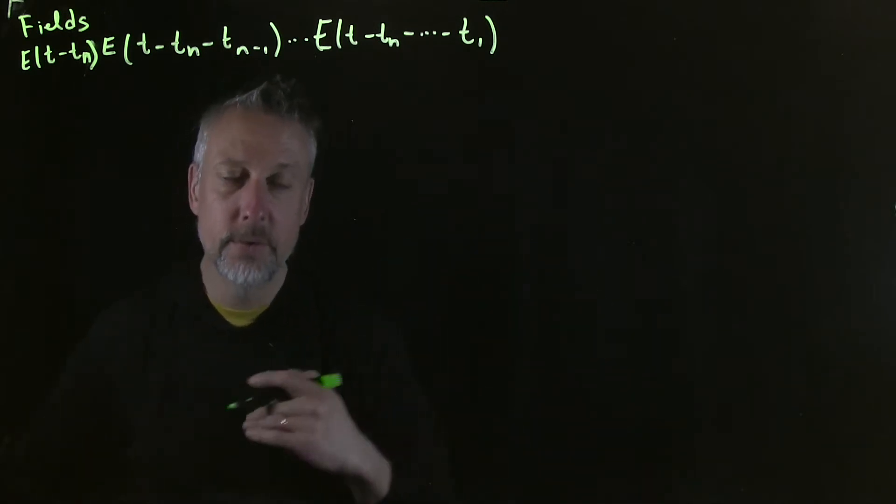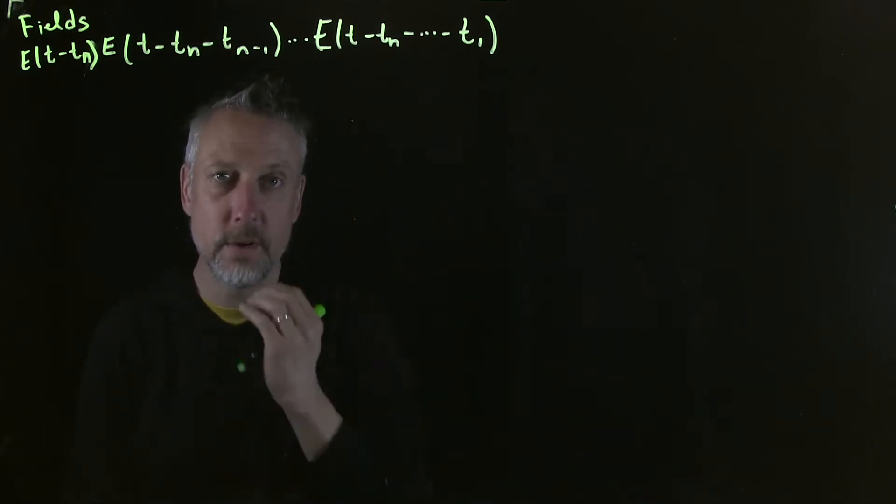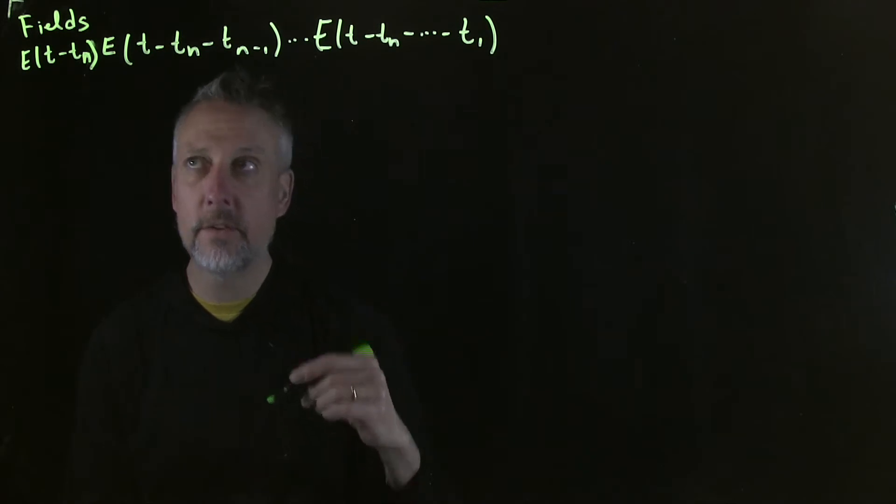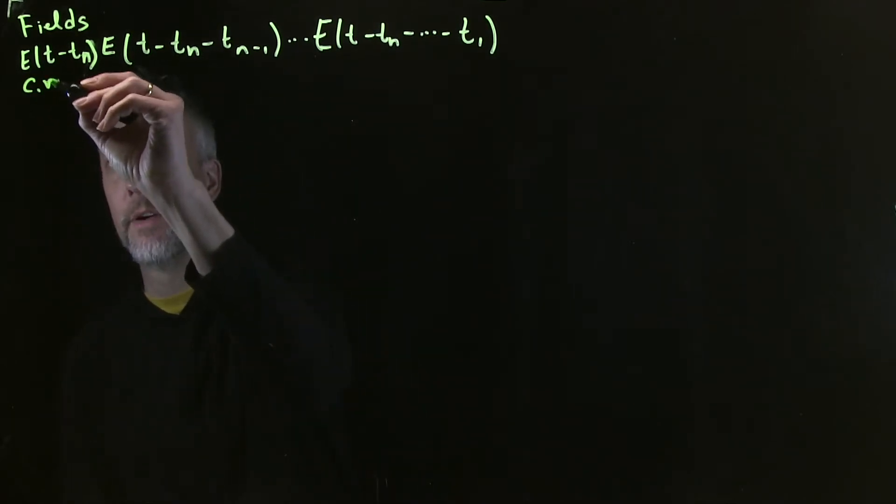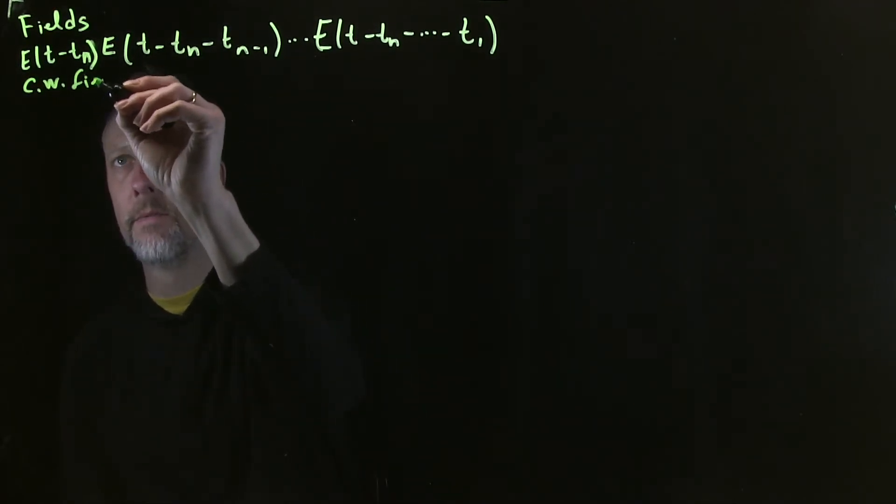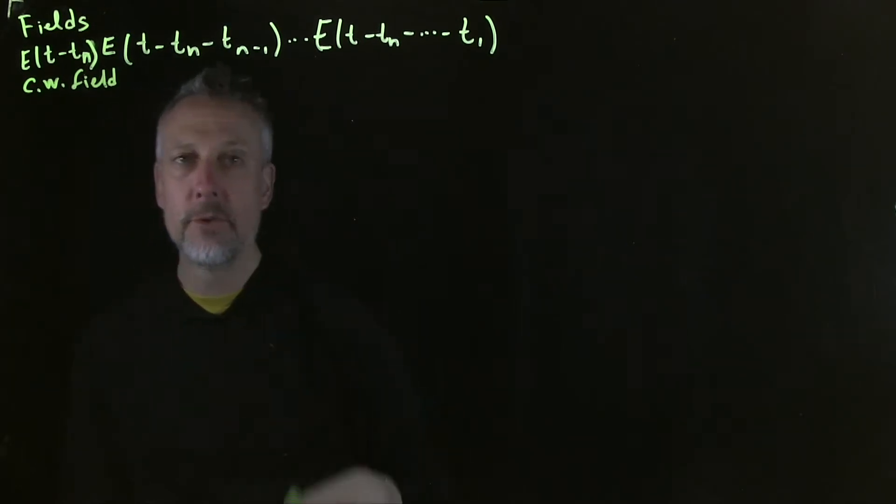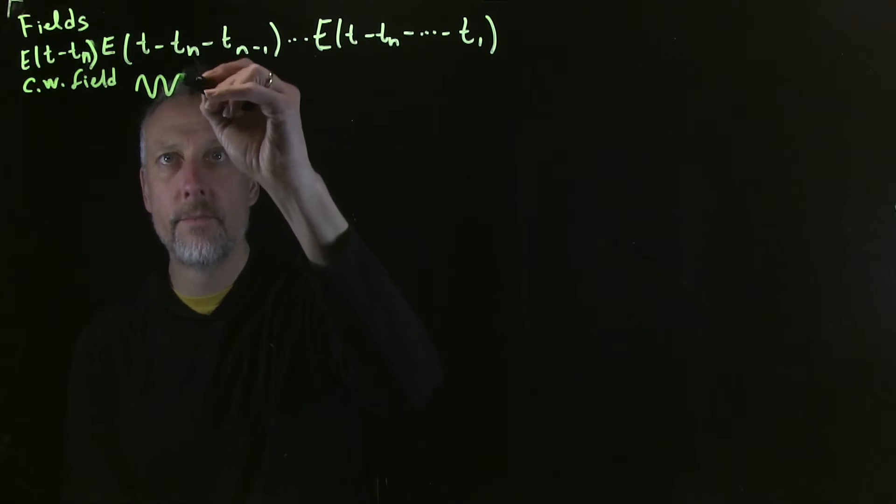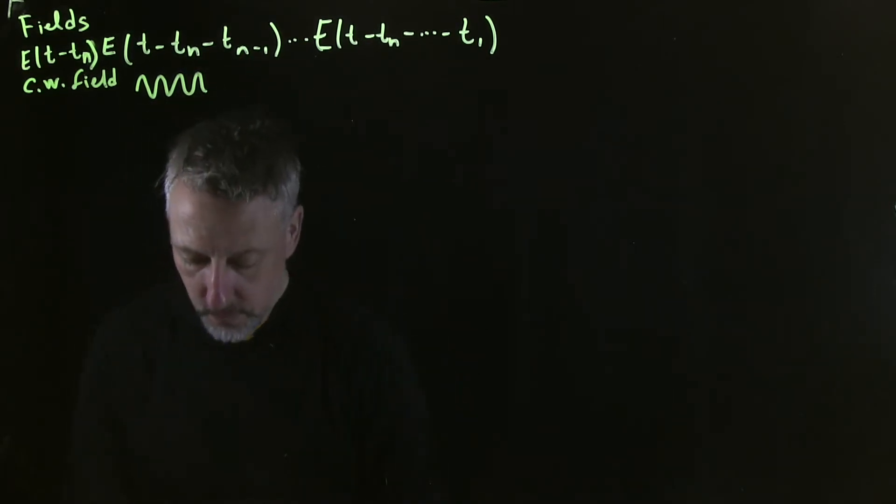So what we're going to do, though, is take the opposite view. Instead of having a delta function in time, we're going to consider a CW, or continuous wave field. CW is just jargon, but what it means is like you can think of this like a sine wave.